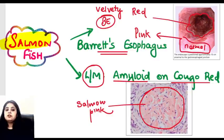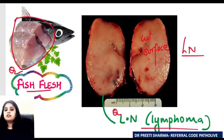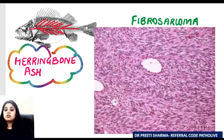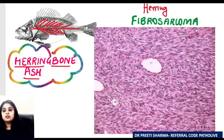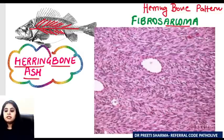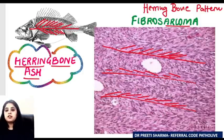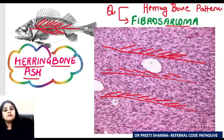Herring bone pattern: the herring fish has vertebrae with bones radiating out from the spine. The tumor which shows the herring bone pattern in pathology is fibrosarcoma — a malignant tumor. You can see lines going through with tumor cells coming out on either side, just like the spine and bones of a herring fish. Herring bone pattern in fibrosarcoma is a very famous exam question.